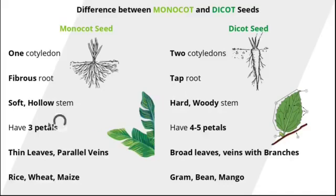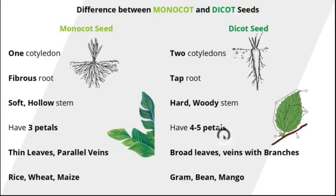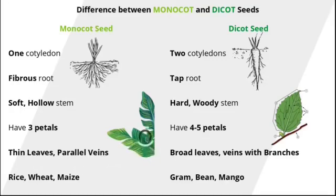The monocot plants have flowers with three petals, whereas the dicot plants have flowers with four to five petals. The leaves of monocot plants are long and thin with parallel veins — that is the structure that allows the flow of nutrients to the leaf.